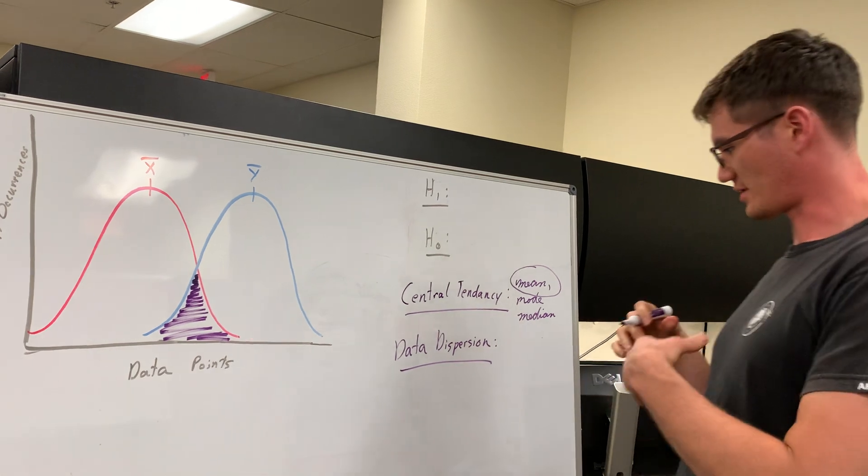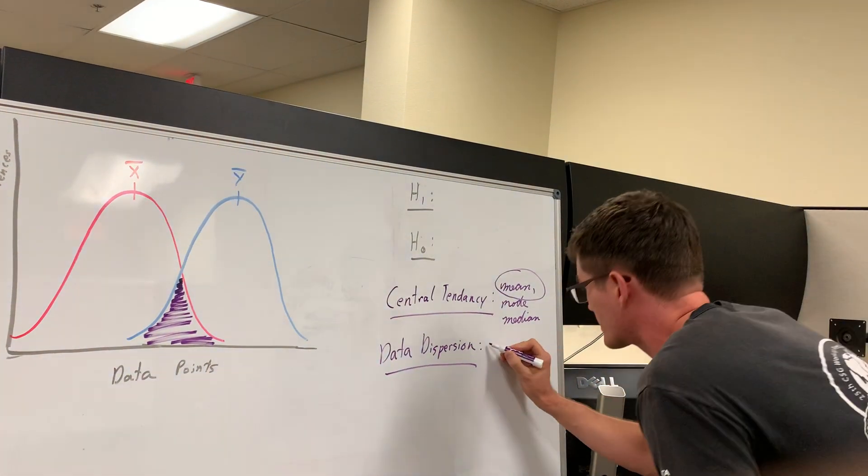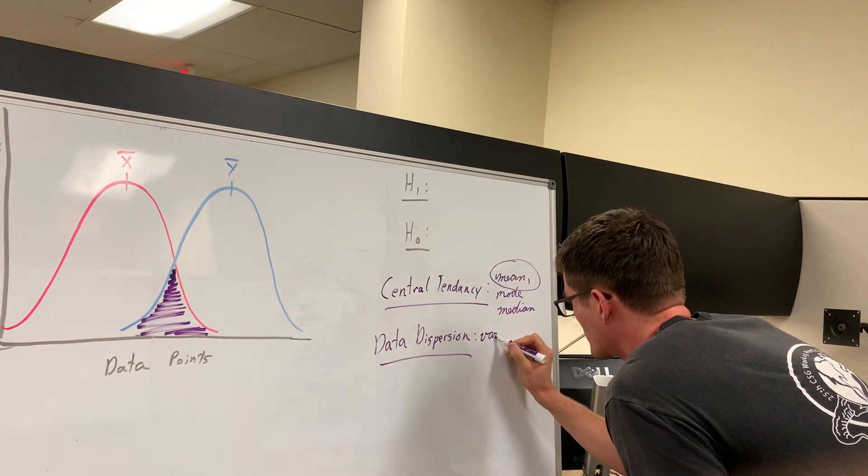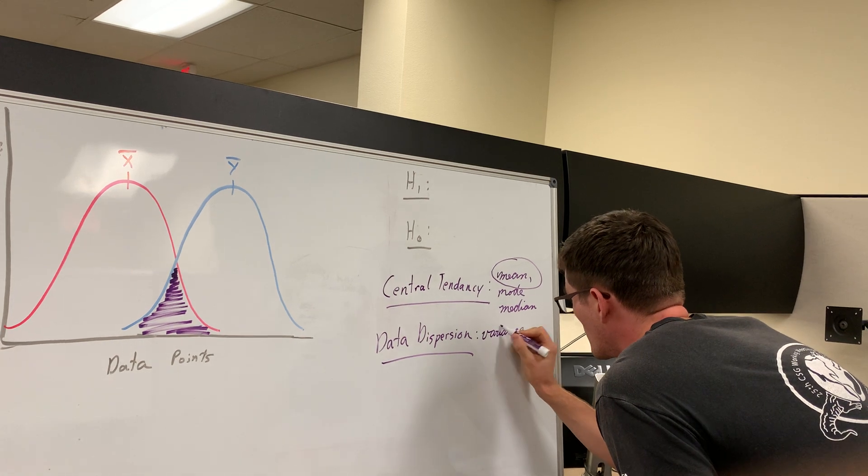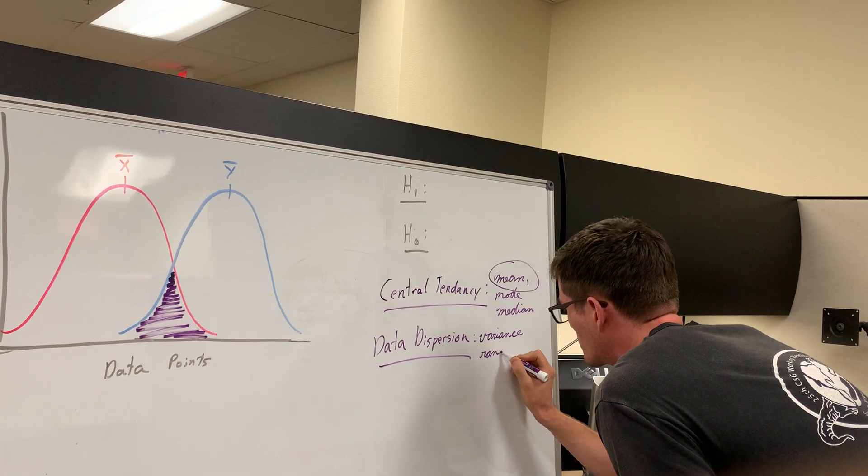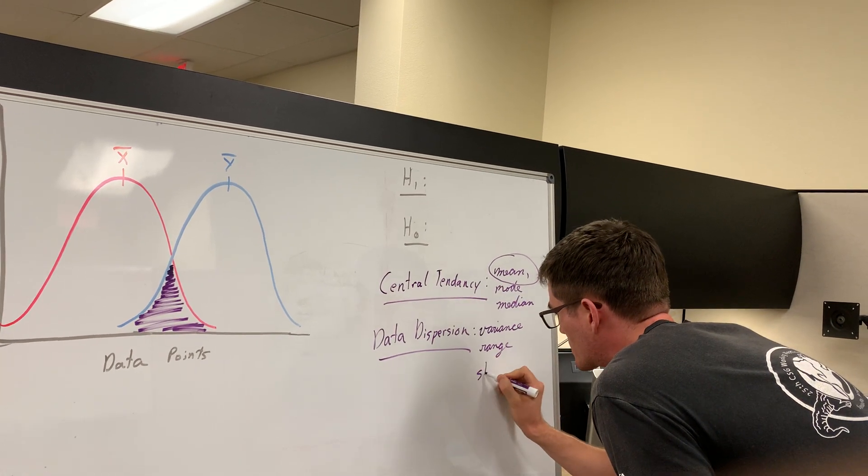Now measures of data dispersion includes things like variance, range, and standard deviation.